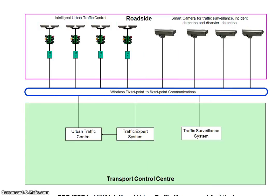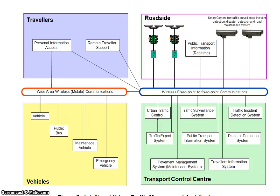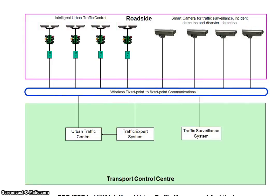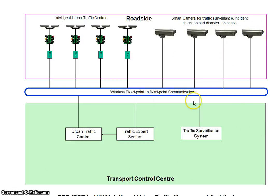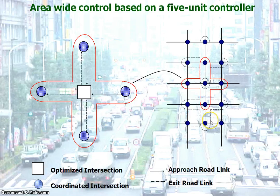This is our complete system, but what we have developed so far is the traffic light with the smart camera detector — to detect incidents and accidents — and this is the system in our control center. For the traffic light system, we use a fully distributed system.